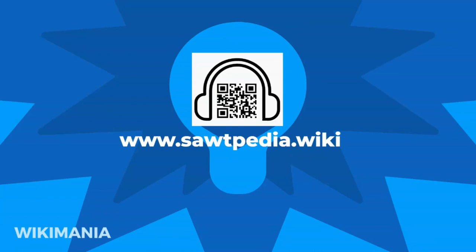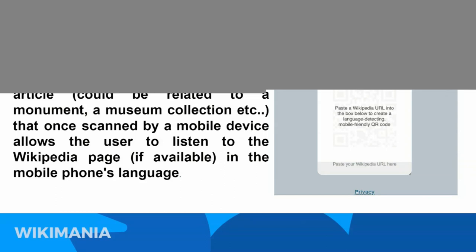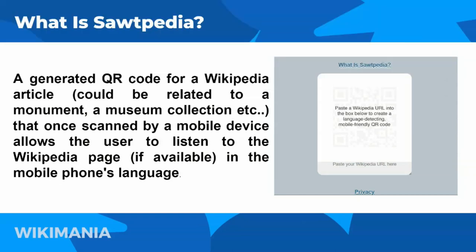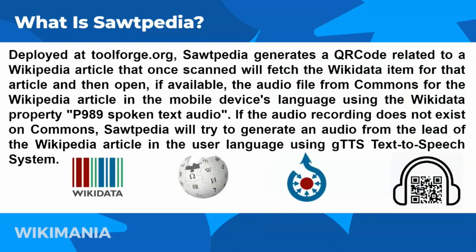So what is Southpedia? Southpedia is a generated QR code for a Wikipedia article, related to a monument, museum collection, or anything that has a Wikipedia page. Once scanned by a mobile device, it allows the user to listen to the Wikipedia page — if available — in the mobile phone's language. The tool is deployed on toolforge.org and allows the generation of QR codes linked to Wikipedia articles that, once scanned, will fetch the Wikidata item for that article and then open, if available, the audio file from Wikimedia Commons for the Wikipedia article using the Wikidata property P989 (spoken text audio).